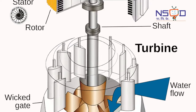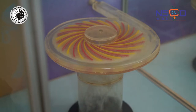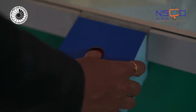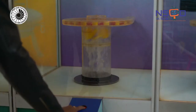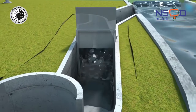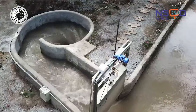The Kaplan turbine is basically a propeller with adjustable blades. The adjustability of the blades ensures that it can work with a wide range of flow rates. Thus, it works great even with a low height of water level. It requires comparatively more quantity of water to run efficiently.